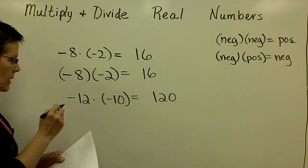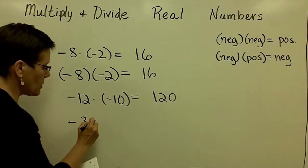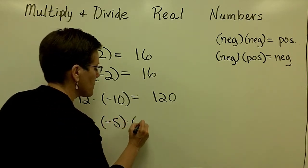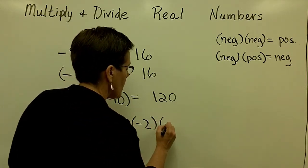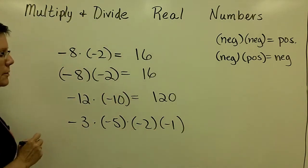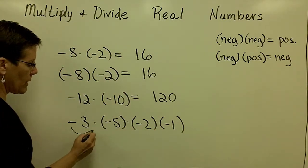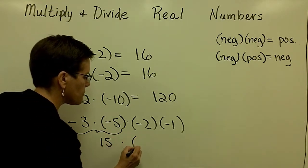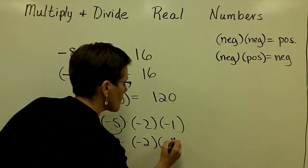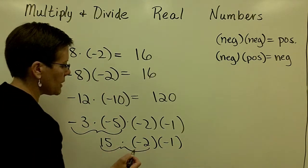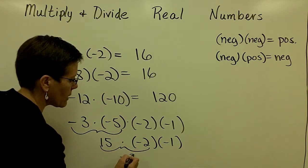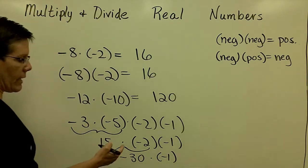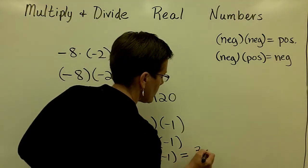Finally, notice that if you multiply several values together at once, pay attention to the signs that result. Let's multiply from left to right. A negative times a negative is a positive 15. Then 15 times a negative 2 is a negative 30. And when I multiply that by a negative 1, a negative times a negative is a positive.